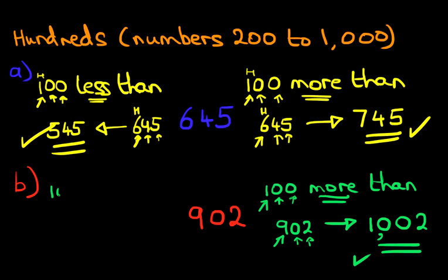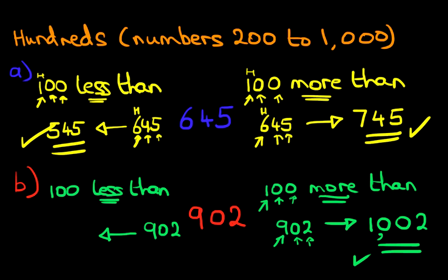Now on this side, let's do 100 less than 902. Again, let's write the number down to begin with. Are we going to go forwards or backwards? Well, it's less than, so therefore we're going to go backwards. The 0 and the 2 are not going to change because they're going back by 0. The 9, however, which is the hundreds digit, is going to go back by 1. So 9 counting back by 1 is 8. Our answer becomes 802.